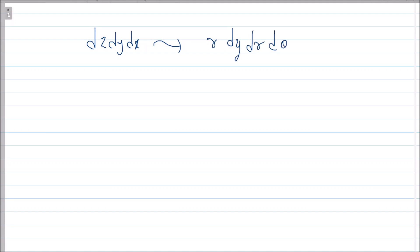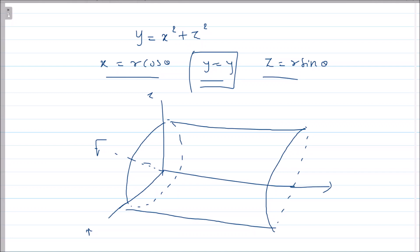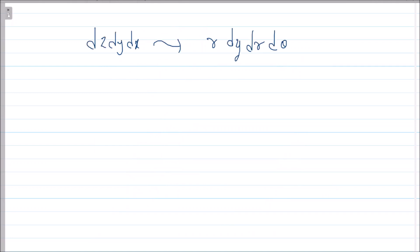Right, because my y is as it is over here. I'm not changing y, so my y will remain as it is, and my dx dz will replace by r dr dθ.